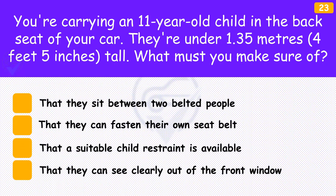You're carrying an 11-year-old child in the back seat of your car. They're under 1.35 metres (4 feet 5 inches) tall. What must you make sure of? The answer is 'That a suitable child restraint is available'. As the driver, it's your responsibility to make sure that children are secure and safe in your vehicle. In a few very exceptional cases when a child restraint isn't available, an adult seat belt must be used.